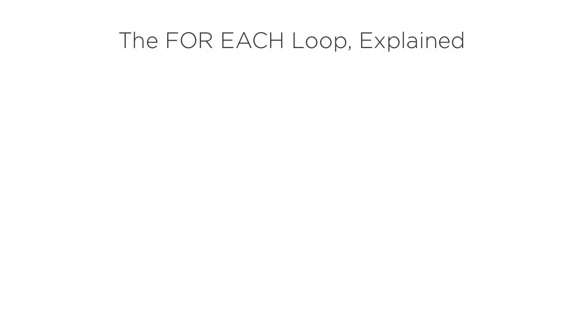Let's take an inside look at how a for each loop works. Remember, a for each loop does an iteration for each record in a collection. We begin with a collection, specifically a list of leads.